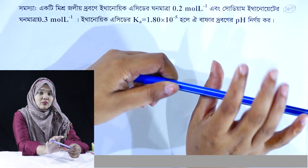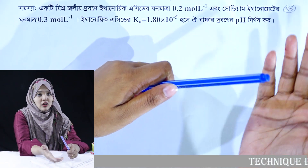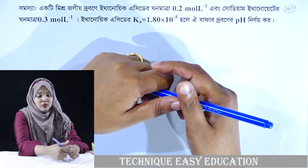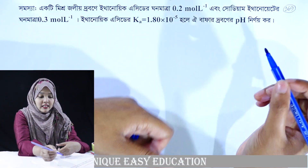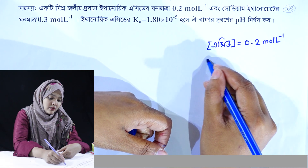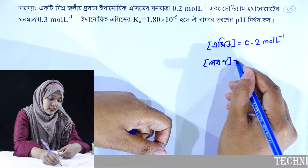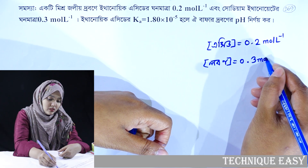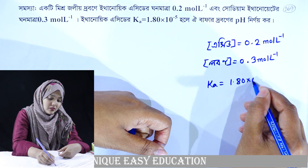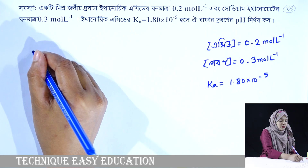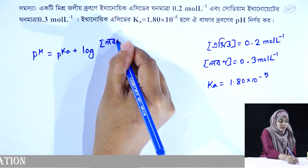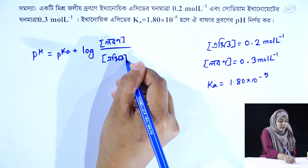We are going to find the pH using the Henderson-Hasselbalch equation. The salt concentration is 0.3 mol per liter and the acid concentration is 0.2 mol per liter, with Ka equal to 1.80 × 10⁻⁵. We know that pH is equal to pKa plus log of salt concentration divided by acid concentration.